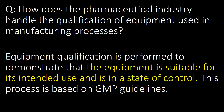How does the pharmaceutical industry handle the qualification of equipment used in manufacturing processes? Equipment qualification is performed to demonstrate that the equipment is suitable for its intended use and is in a state of control. This process is based on GMP guidelines.